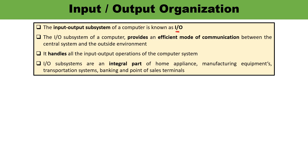That is why this is known as IO. Since it communicates, it provides a very efficient mode of communication. Whatever operations occur in the computer system, the input output organization handles all those operations. IO subsystems are the integral part in various applications — home appliances, manufacturing equipment, and transportation systems. IO systems are the integral part of all these.